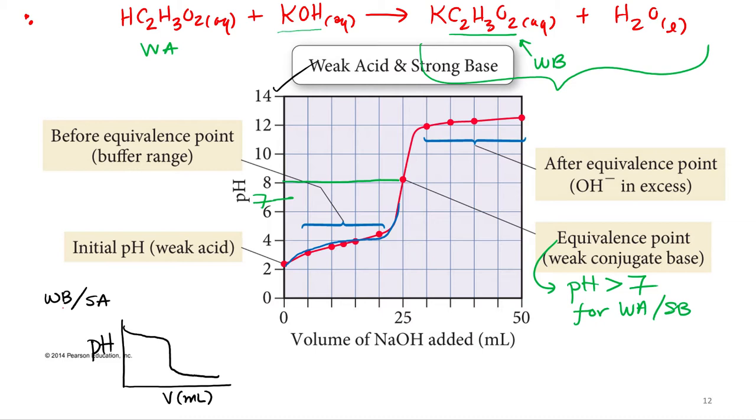Now, for the weak base, after you neutralize all the weak base, you're going to make its conjugate acid. So what do you think the pH is going to be at the equivalence point for a weak base titration? Same thing with the weak base. Since we're making the acid, its conjugate acid at the equivalence point, it will be acidic.